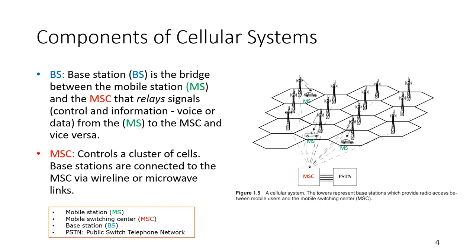The components of the cellular system include three or four main components. We have the mobile stations — it doesn't have to be a car, just a mobile unit. Then we have the base stations, shown as a tower symbol. The base station is the bridge between the mobile station and the Mobile Switching Center (MSC), relaying control, information, voice, or data from the mobile station to the MSC.